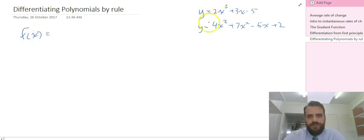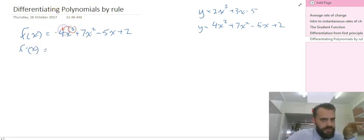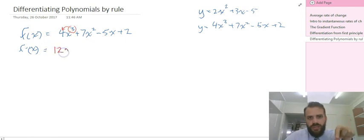f of x equals 4x cubed plus 7x squared minus 5x plus 2. Now the derivative of that is going to be taking the power, multiplying it by the number out the front. So 3 times 4 is 12, x, decrease 3 by 1, so that's x squared.